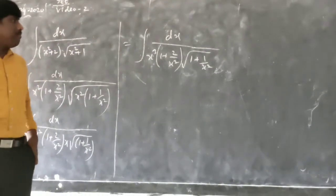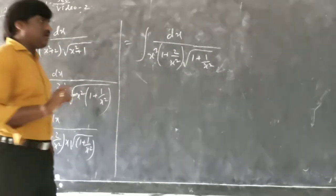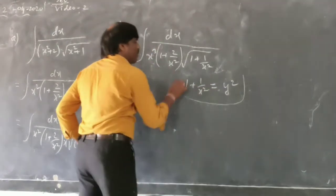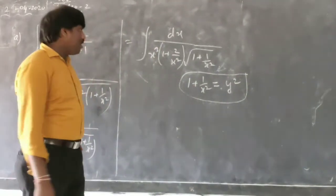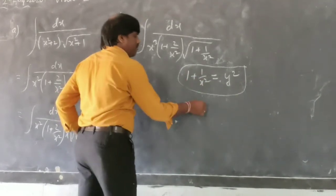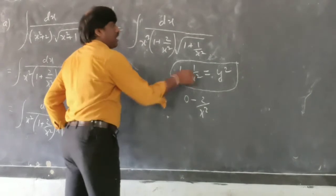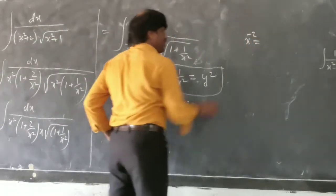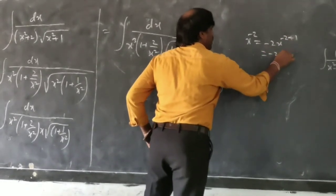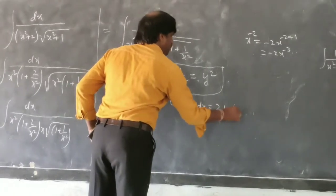To solve this, let 1 + 1/x² = y². My suggestion is to take 1/x² as y² — it becomes easier. Differentiating: the derivative of 1 is zero, and the derivative of 1/x² = x⁻² is −2x⁻³, that is −2/x³. So −dx/x³ = y dy, which means dx/x³ can be written as −y dy.